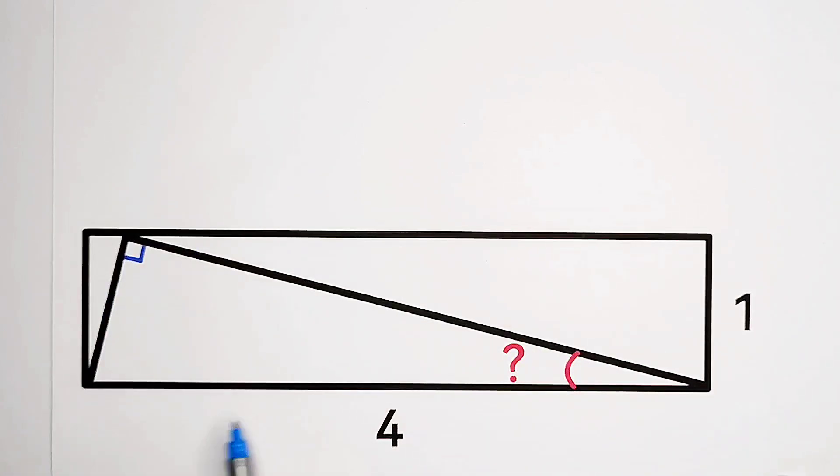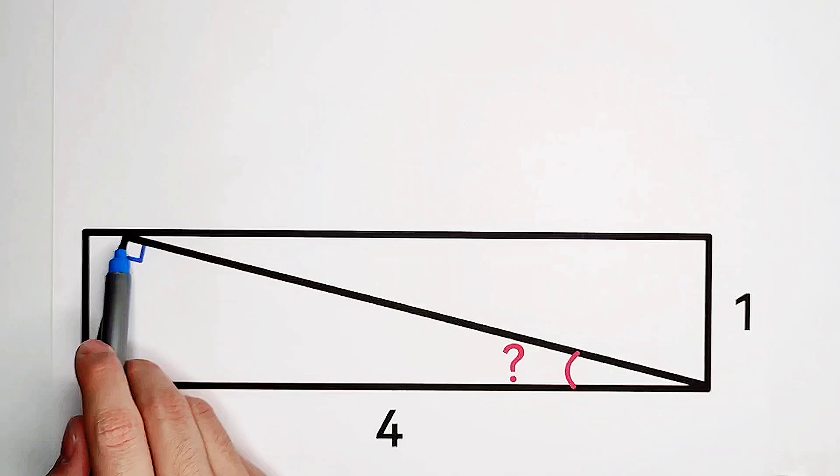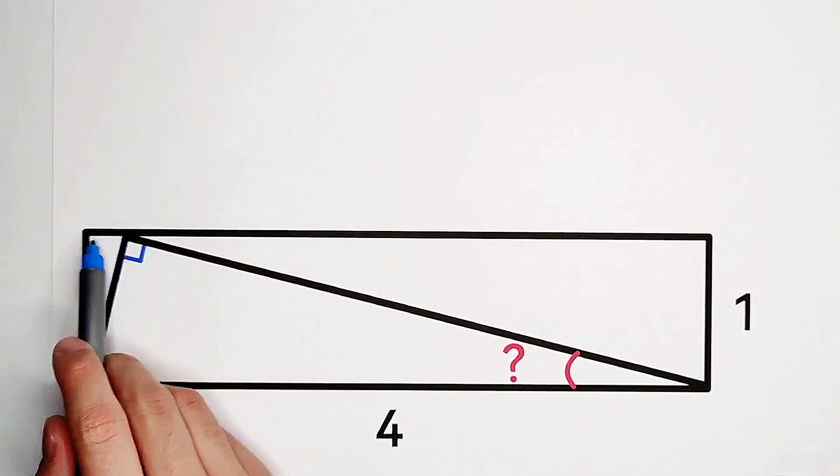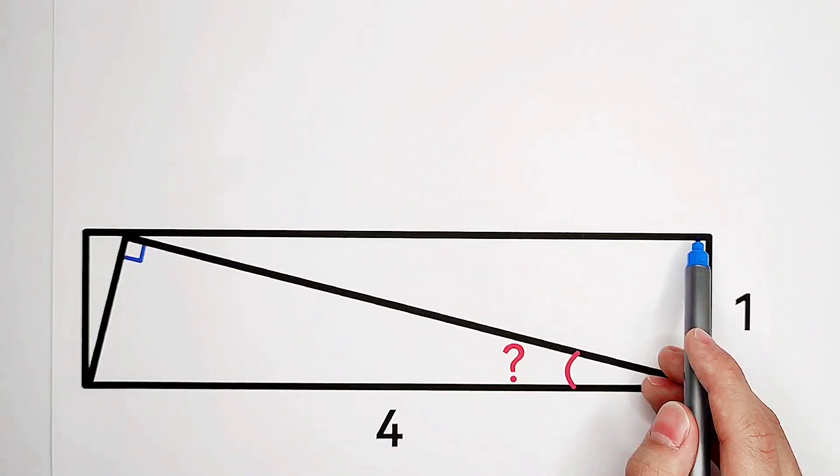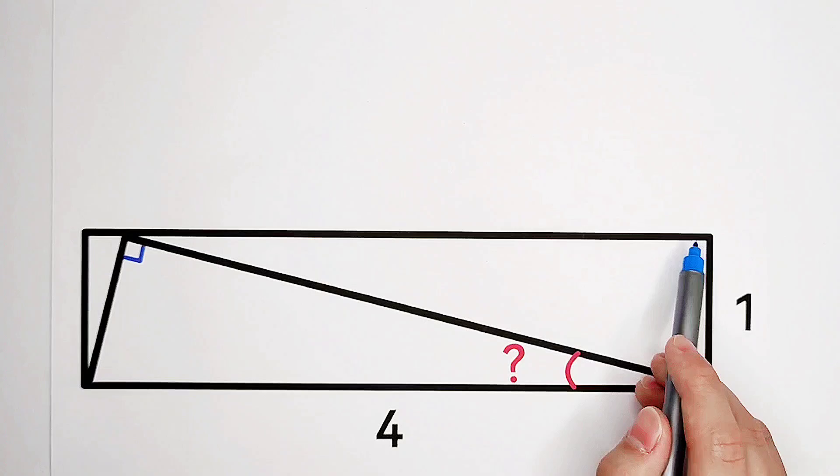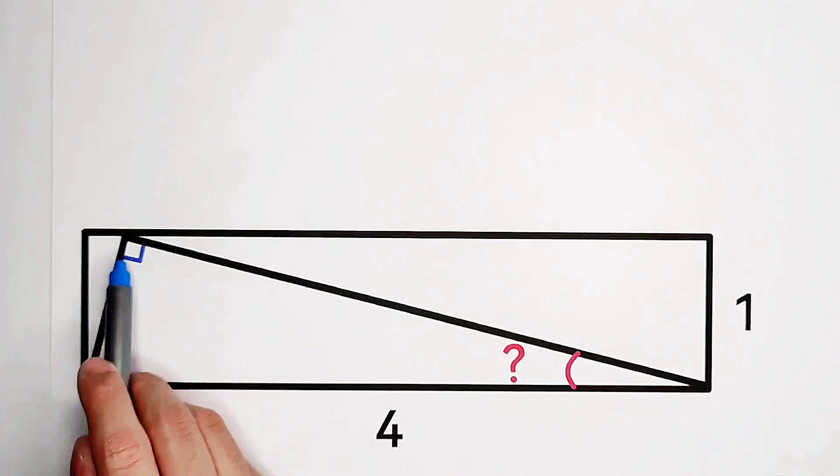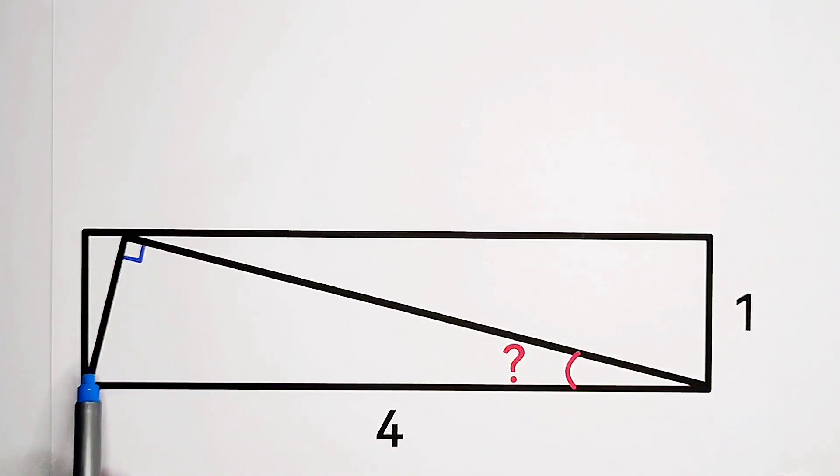Here we have a rectangle with a length of 4 and a width of 1. This point is on this side. And here we have a right triangle. Now, we have to evaluate this angle. Simple and easy. What shall we do?